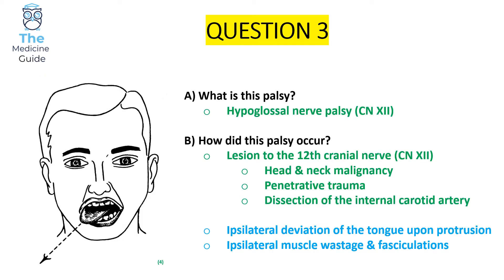This is due to a hypoglossal nerve palsy, which is the 12th cranial nerve. There will be an ipsilateral deviation of the tongue upon protrusion, and ipsilateral muscle wastage and fasciculation localised to the tongue. In this image the tongue is deviated to the right, indicating a right 12th nerve palsy. Causes include head and neck malignancy, penetrative trauma, or dissection of the internal carotid artery.